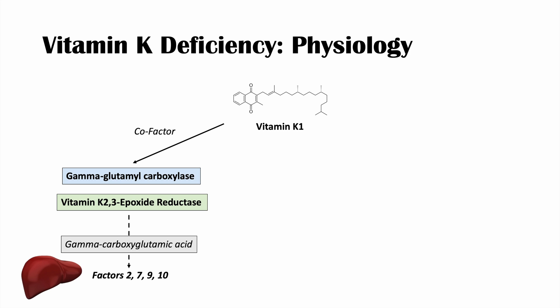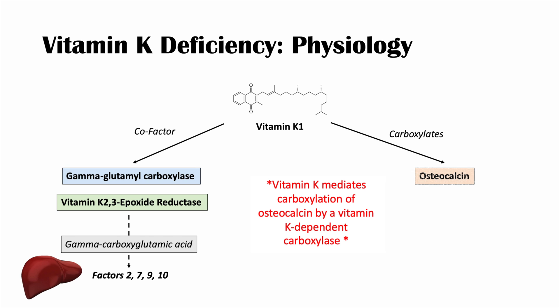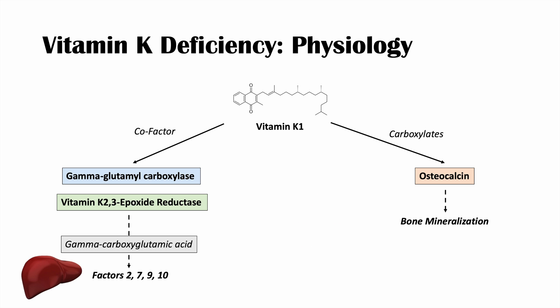If we don't have gamma-carboxyl glutamic acid added properly to the coagulation factors, those factors don't work properly. Vitamin K1 also carboxylates osteocalcin, which is involved in bone mineralization. When vitamin K levels are low, osteocalcin is carboxylated less, resulting in less bone mineralization and a lower bone mineral density.